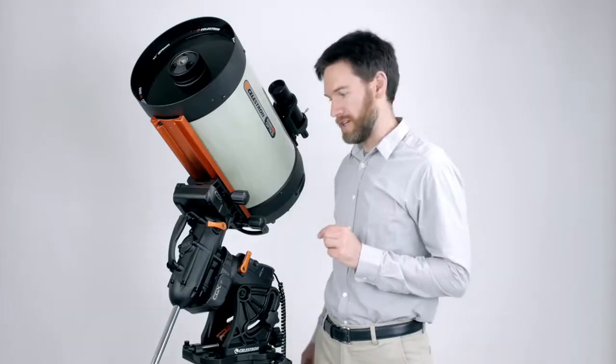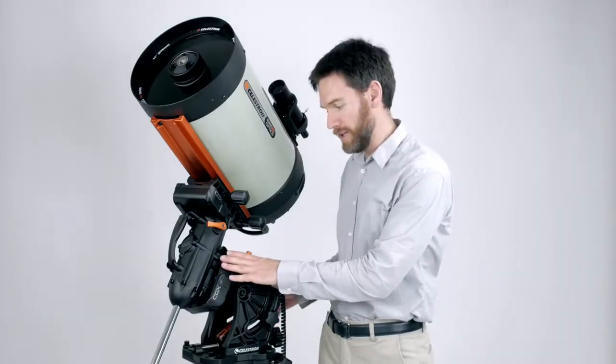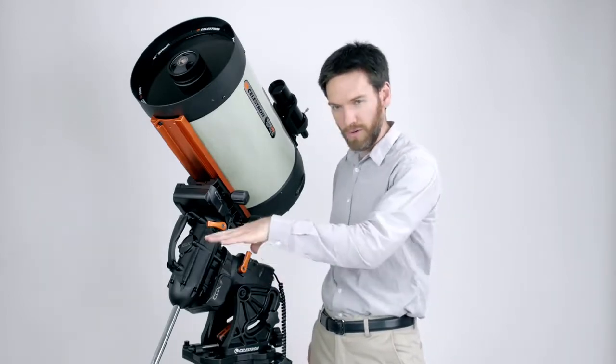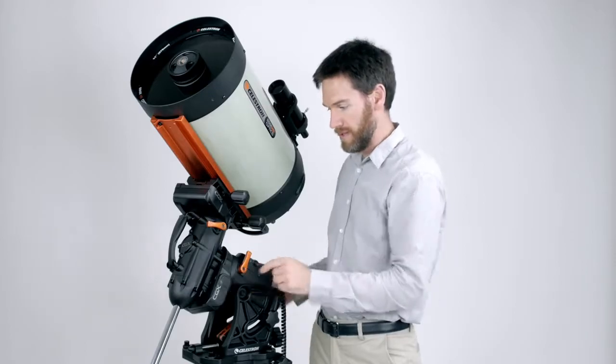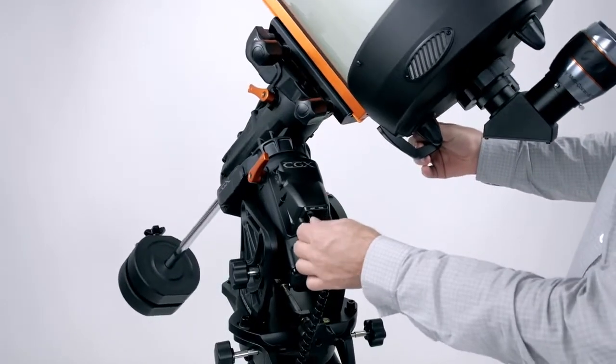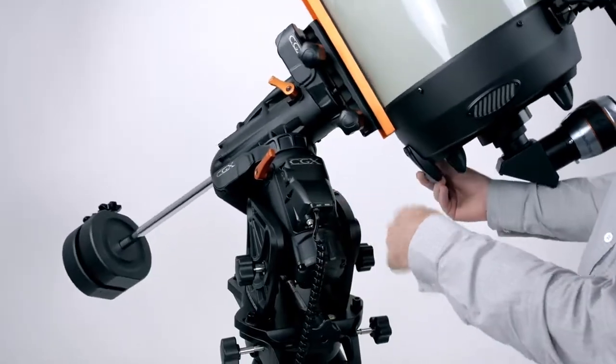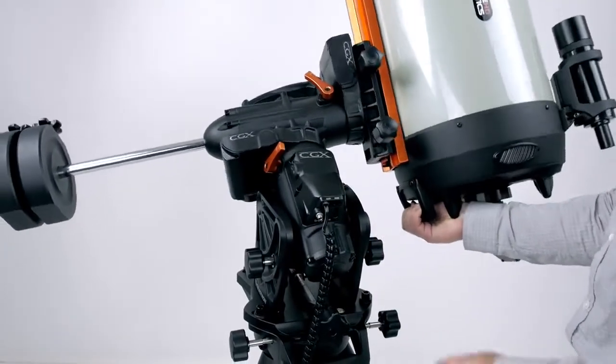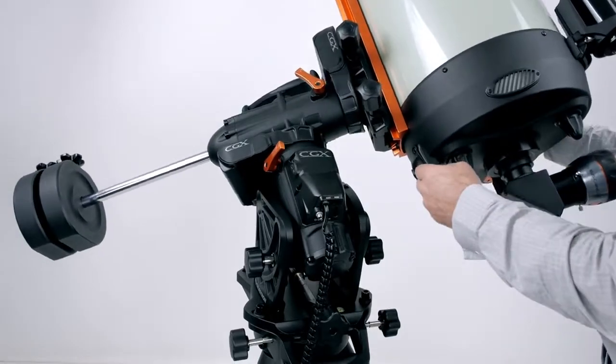Here's a first for Celestron: all internal cabling. You'll notice, with the exception of the hand control, that there are no cables going to any of the motors. As a result, you can see that your hand control and your power port, any potential accessories, they do not move as the mount moves across the sky. And you've greatly reduced any chance of having any unwanted cable snags.